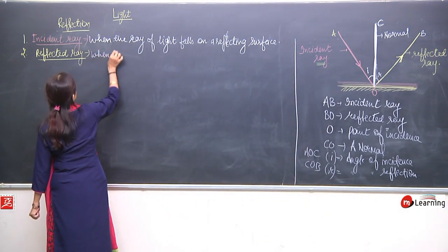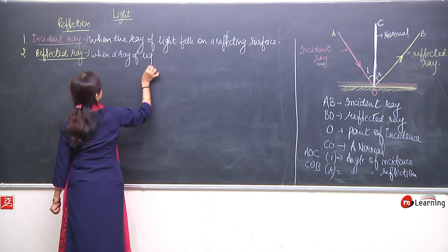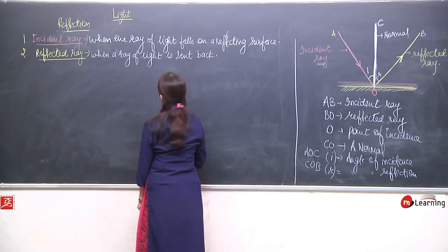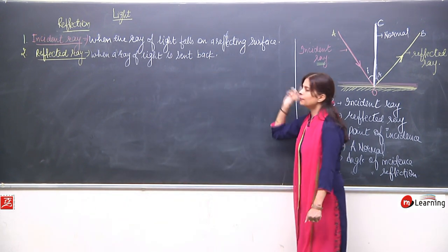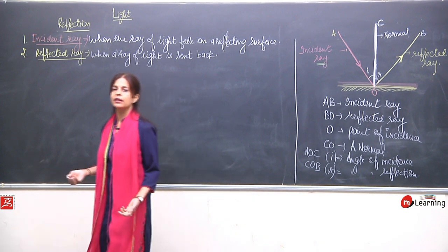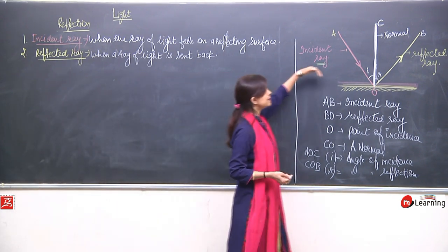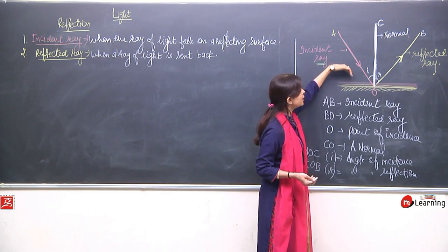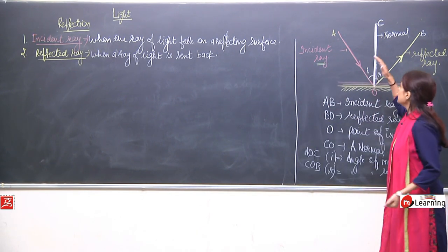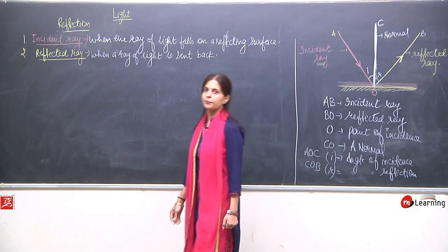When a ray of light falls on a reflecting surface and is sent back — I'm not writing the complete definition on the blackboard; it is about explaining and understanding. So: when the ray of light falls on the reflecting surface it is known as the incident ray, and when it is sent back it is known as the reflected ray.